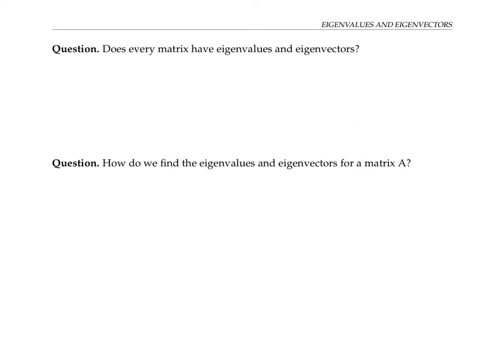So does every matrix have eigenvalues and eigenvectors? Is there always some scalar lambda and some nonzero vector x such that Ax equals lambda x? If we allow for complex numbers as lambdas — numbers with i in them — then it turns out the answer is yes. But if we're only interested in real eigenvalues, as we will be in this class, then the answer is no.